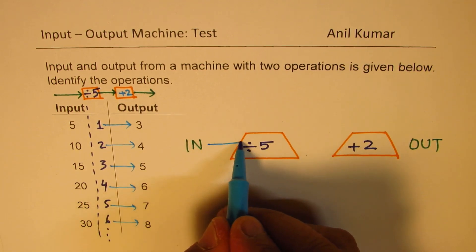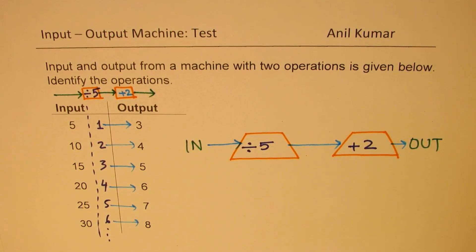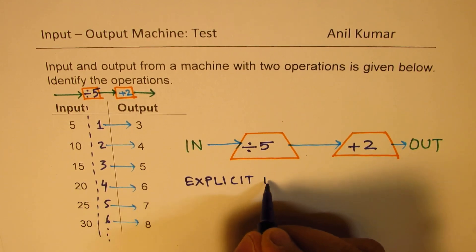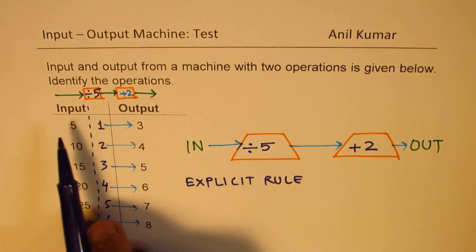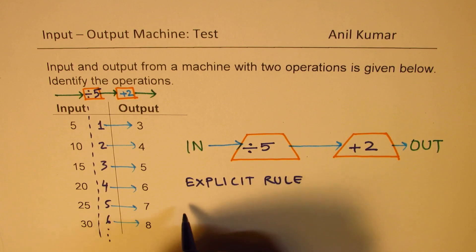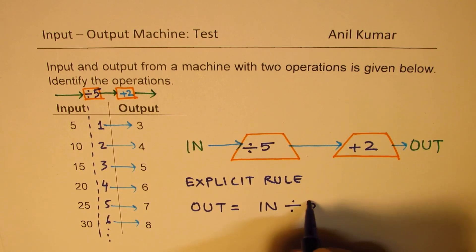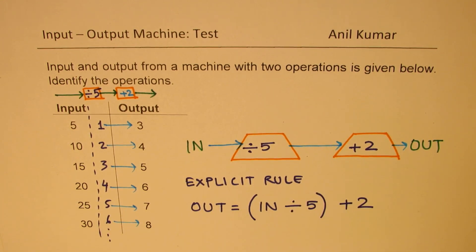So that is how the input-output machine is working. We can also write this as an explicit rule. The output equals input divided by 5, then add 2. First you do the division operation, and after that add 2 to get your result. With this in mind, it should not be very difficult to get answers for the other questions.